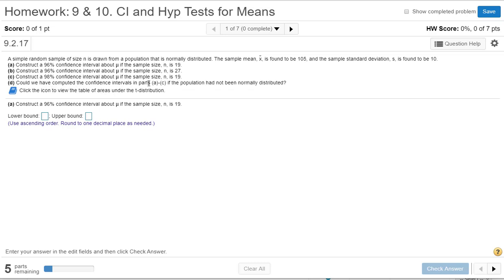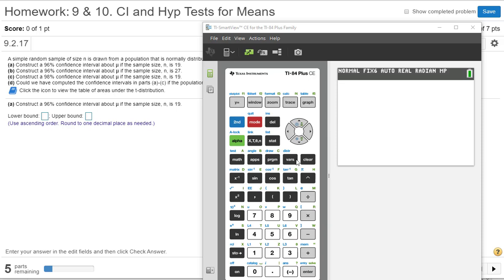Could we have computed a confidence interval A through C if the population had not been normally distributed? Okay, so we'll do this both on TI and on StatCrunch.